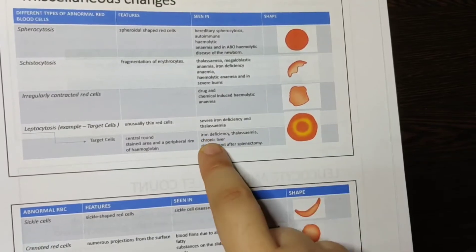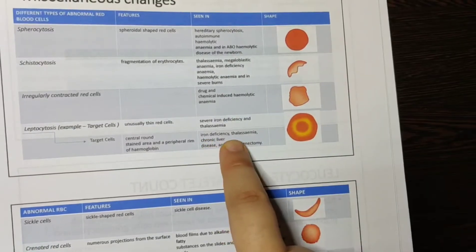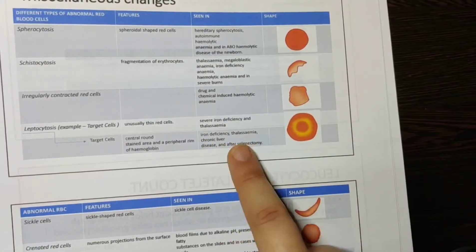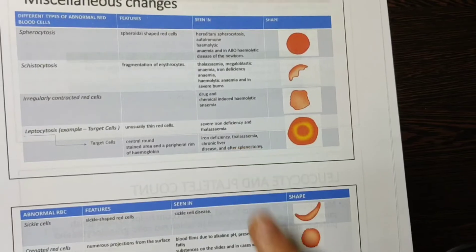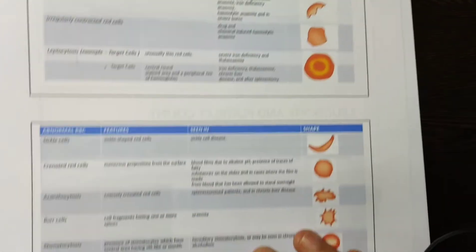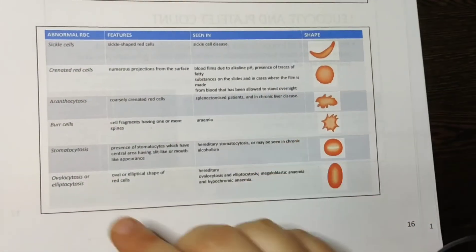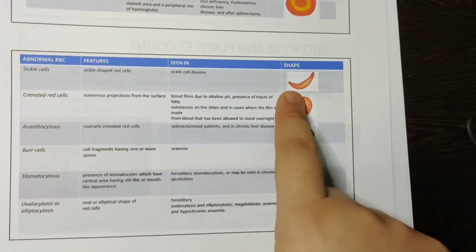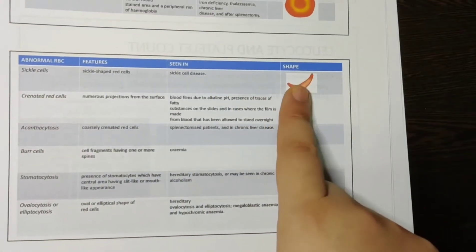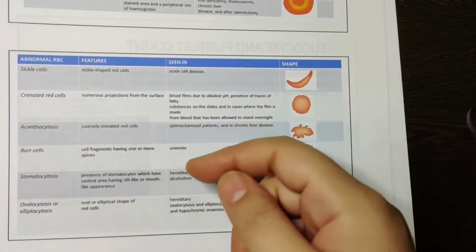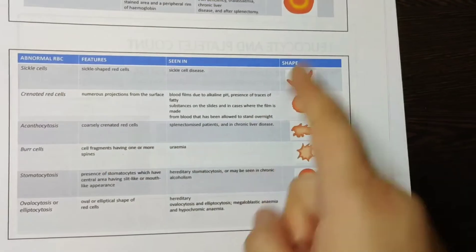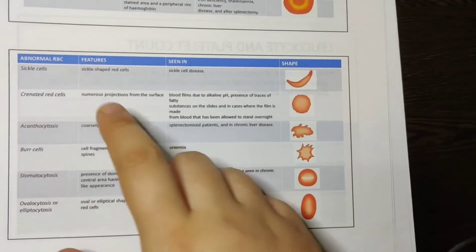This leptocytosis is seen in iron deficiency anemia, thalassemia, chronic liver disease, and after splenectomy. Next, sickle cells. Sickle cell means it is sickle-shaped — you must have seen this while farming when they cut grass — so, sickle shape.